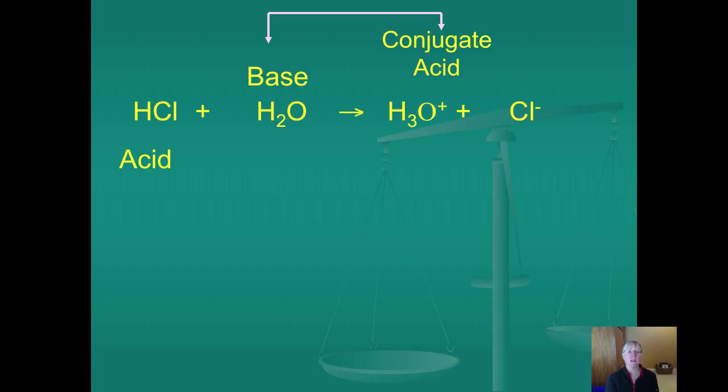So we call the thing that the acid becomes a conjugate base. And we call the thing that the base becomes a conjugate acid. So let's take a look at that. The conjugate acid of H2O is H3O. And the original acid, hydrochloric, all that's left of it is a chloride ion. And that is the conjugate base. So it's really easy. Identify who donated and who received a proton first. So you can see which one is the acid and which is the base. And then the acid becomes a conjugate base. The base becomes a conjugate acid.